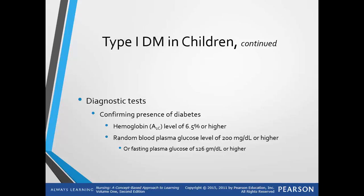Looking at diagnostic tests for confirming the presence of diabetes, this can be done through a hemoglobin A1C level of 6.5 or higher in combination with a random blood plasma glucose level of 200 mg per deciliter or higher, or a fasting plasma glucose of 126 mg per deciliter or higher.